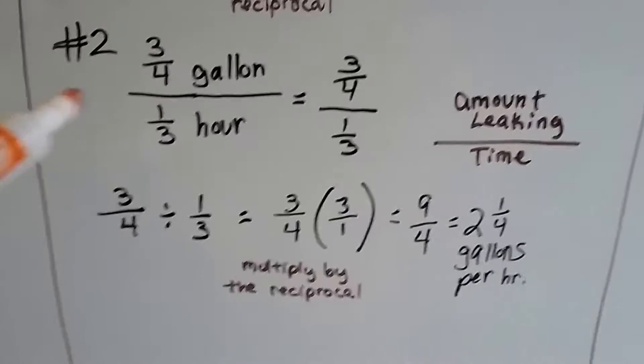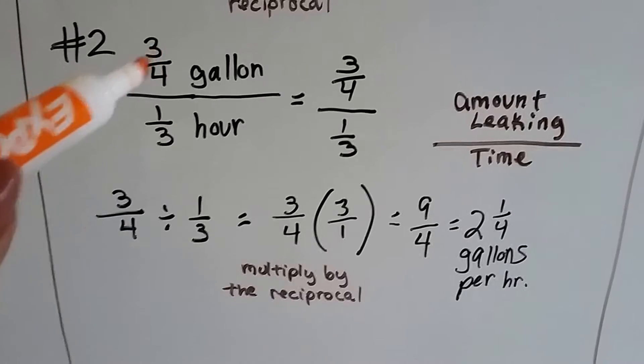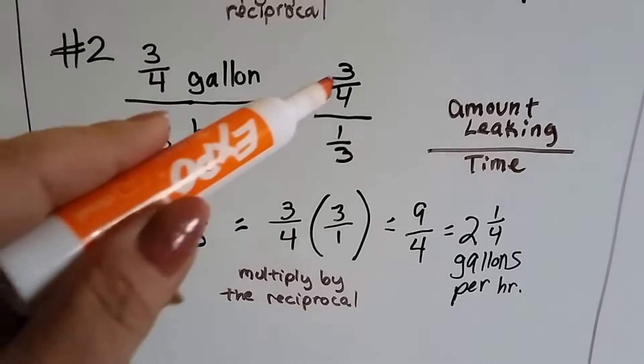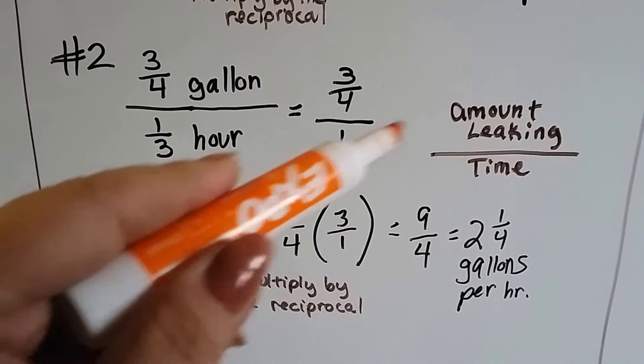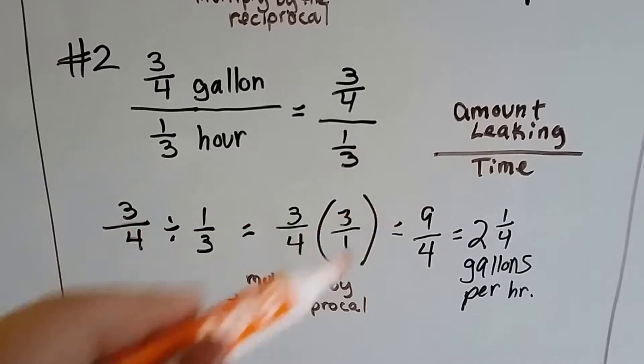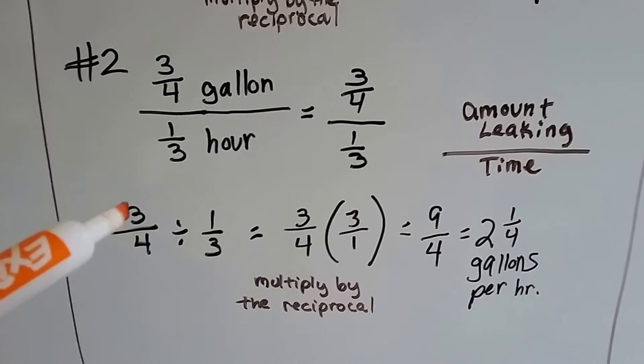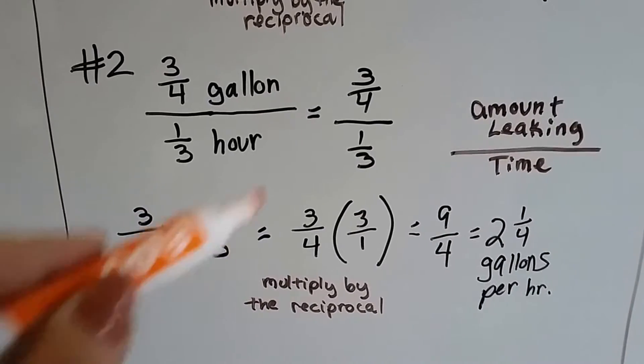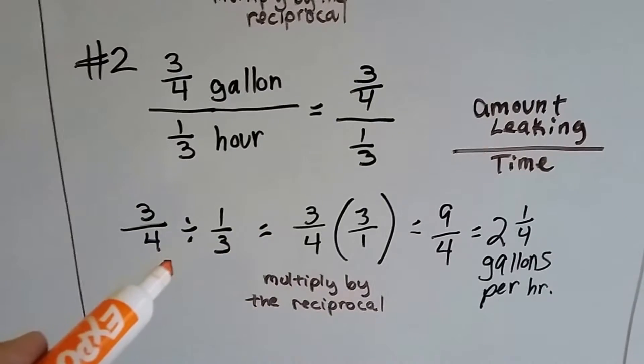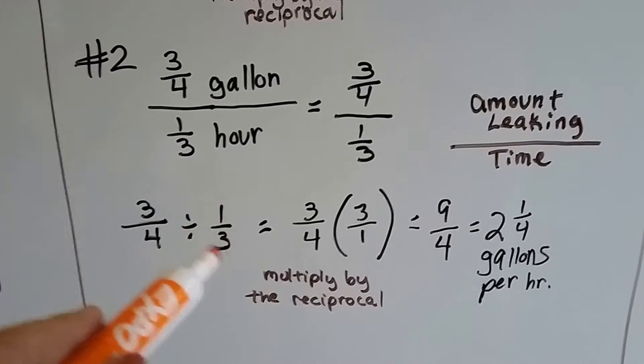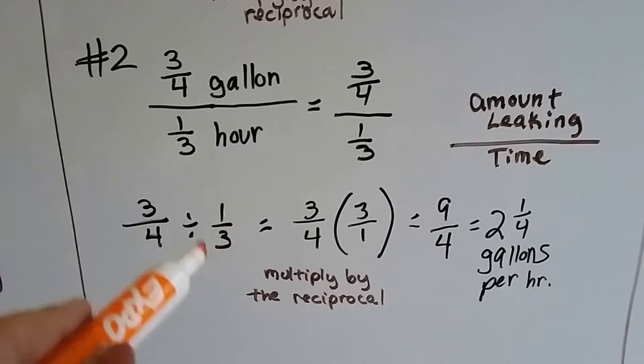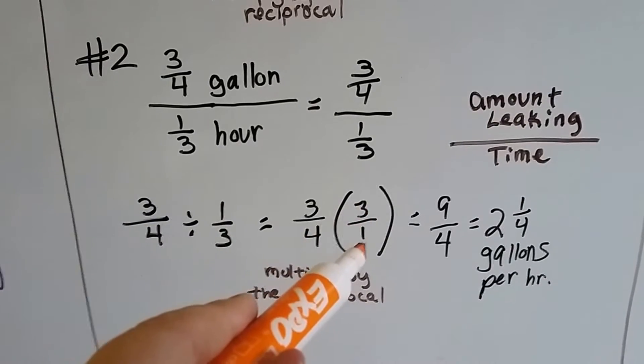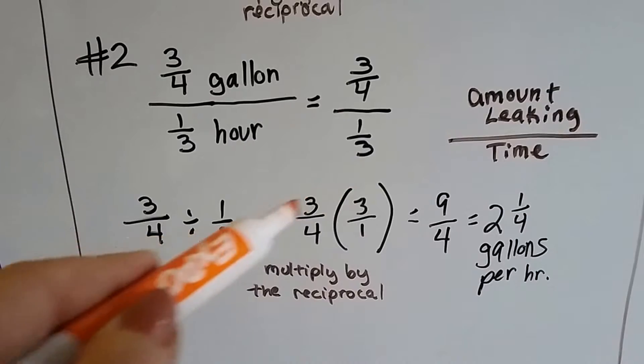Now let's do number two. It said three-fourths of a gallon was leaking in a third of an hour. So that's three-fourths over one-third. That's the amount of leaking over the time. We rewrite it as three-fourths divided by one-third because that's all that means. And in order to divide this, we need to multiply it by the reciprocal of this one-third. So it needs to flip upside down to a three over a one. And then we just multiply straight across.